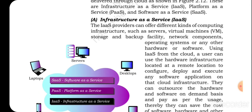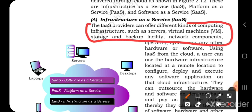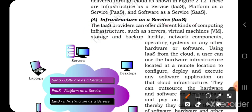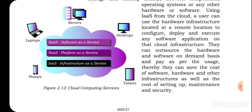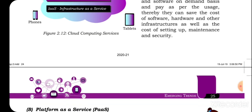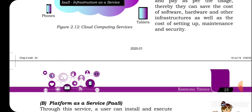Infrastructure as a Service means that different computing components — like servers, virtual machines, backup facility, and network components — are all available on the internet. Hardware or software can be provided from the cloud, meaning the infrastructure is available at a remote location and you can use that infrastructure to complete your work. Users can outsource hardware and software on a demand basis and pay as per usage, thereby saving the cost of software, hardware, other infrastructure, maintenance, and security.